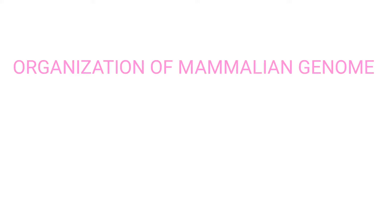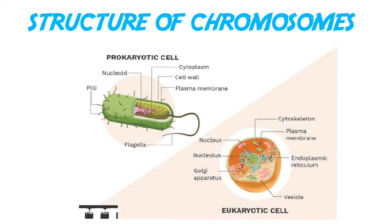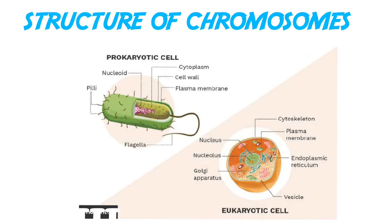Hello guys, welcome to Study Pharma. Today we are going to discuss the organization of the mammalian genome. First of all, let us know what a chromosome is. Chromosomes are thread-like structures of nucleic acid and protein found in the nucleus of most living cells, carrying genetic information in the form of genes.